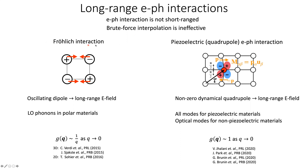The first is the Fröhlich interaction. This interaction occurs because an oscillating dipole in the solid generates a long-range electric field. This type of interaction happens for the longitudinal optical (LO) phonon modes of polar materials. In this case, g goes as 1/q as q approaches 0.